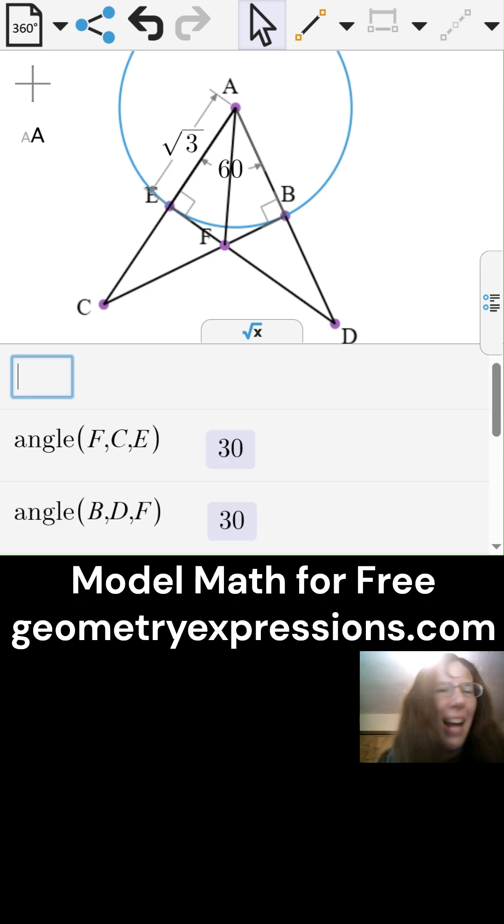Ah-ha, they have the same angles. Well, that's all 6. 30-60-90 triangles.